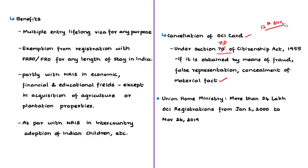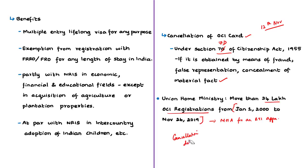As per the news article, about 34 lakh overseas citizens of India (OCI) registrations had been done from 1st January 2000 to 26th November 2019. This information was given by the Ministry of Home Affairs in reply to an RTI application. However, the ministry declined to give information relating to the number of persons whose OCI cards had been cancelled, stating that this information falls outside the mandate and scope of the RTI Act of 2005.